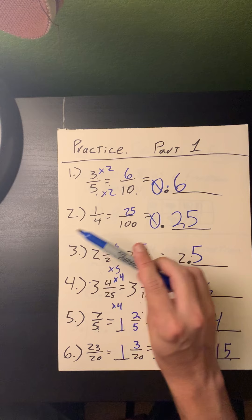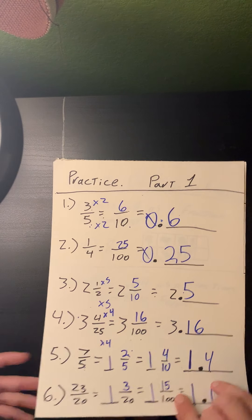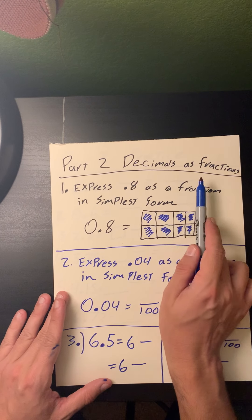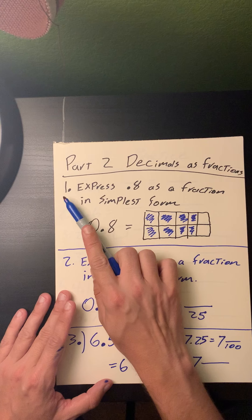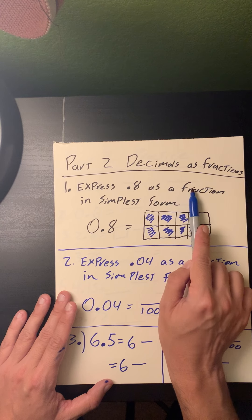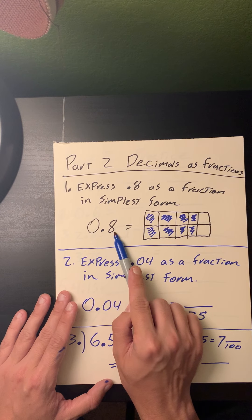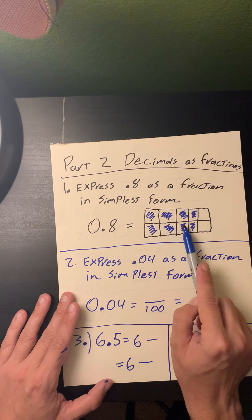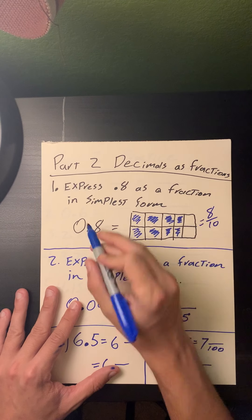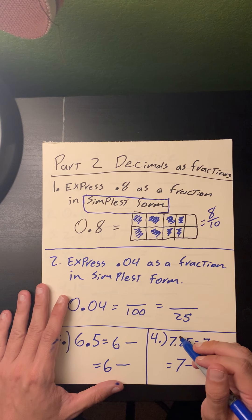Moving on to Part 2: converting our decimals into fractions. Part 2 — decimals as fractions. Number one: I have the decimal 0.8, or eight tenths, and I need to convert it to a fraction in its simplest form. Zero point eight is equal to the fraction eight tenths. However, simplest form means I need to find a common factor — both 8 and 10 are even numbers and can be divided by 2.